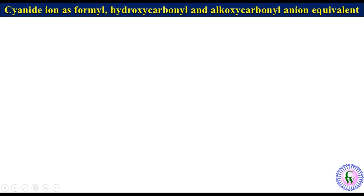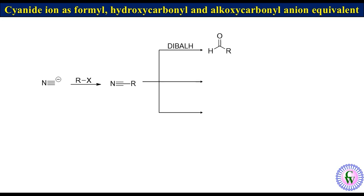Cyanide ion as formyl, hydroxy carbonyl, and alkoxycarbonyl anion equivalent. Cyanide ion has a negatively charged carbon atom. It reacts with an alkyl halide to produce an alkyl nitrile, which can react with DIBAL to produce an aldehyde. Complete hydrolysis with HCl in water gives a carboxylic acid, and alcoholysis in the presence of HCl gives an ester. The natural polarity of the carbonyl carbon in these carbonyl compounds is positive, derived from the negatively charged carbon of cyanide. So this is an example of umpolung strategy for making these carbonyl compounds.